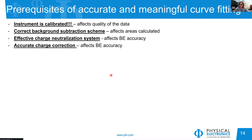Before we start any curve fitting, it all comes back to the quality of the data. We shouldn't underestimate instrument calibration, which affects signal-to-noise, binding energy linearity, etc. Background subtraction is very important — it affects your calculated areas and therefore concentration. If you have samples requiring charge neutralization, you need to ensure it is effective and that charge correction is performed accurately, because these factors affect binding energy accuracy and therefore your identification of chemical moieties.